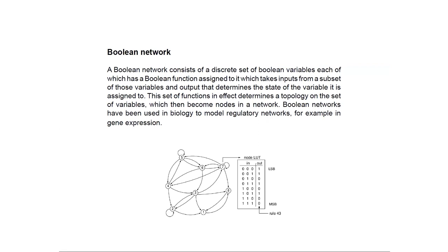We will not really work with Boolean networks in this course, but I wanted to show them. Here we have nodes — basically a graph — the nodes have Boolean states, and there are rules for how these states are updated. Then we iterate through states, basically switching between them.